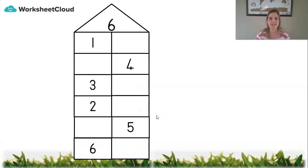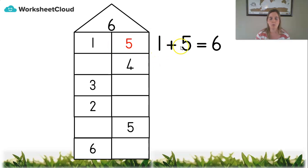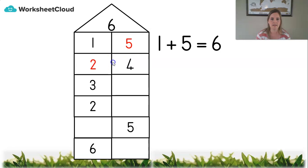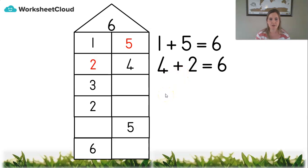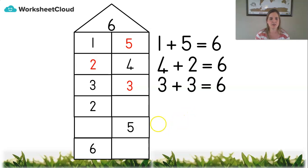Now let's try that again. This time we're going to think of a sum. On the top floor we've got one guest in the bedroom — one plus five equals six. This is what we call bonds of six. That means the sums that make up six. Let's do the next one — two plus four equals six. Or four plus two — it's the same, it doesn't matter which way around you put them. Next row: three in this bedroom so we need three over there. Three plus three equals six.